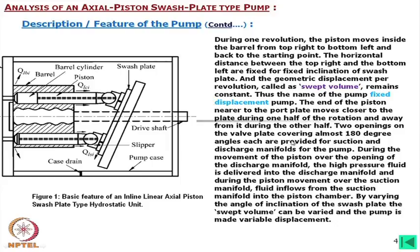Two openings on the valve plate, each covering almost 180 degrees, are provided for suction and discharge manifolds. During the movement of the piston over the discharge manifold opening, high pressure fluid is delivered into the discharge manifold. During piston movement over the suction manifold, fluid flows in from the suction manifold into the piston chamber. By varying the angle of inclination of the Swashplate, the swept volume can be varied, making it a variable displacement pump.